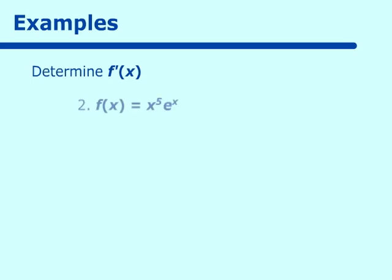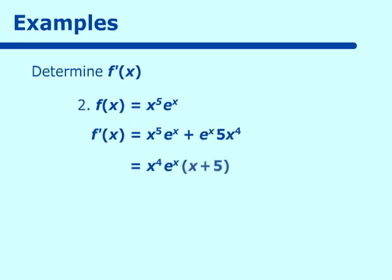For the next problem, finding f prime of x where f of x equals x to the fifth times e to the x: apply product rule as x to the fifth times the derivative of e to the x, which is e to the x, plus e to the x times the derivative of x to the fifth, which is 5x to the fourth. Factor out e to the x and x to the fourth. The x to the fifth term contributes an x and the other term contributes 5, giving e to the x times x to the fourth times x plus 5.